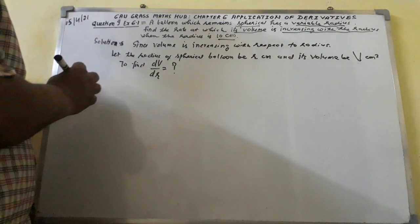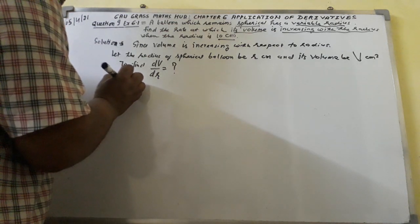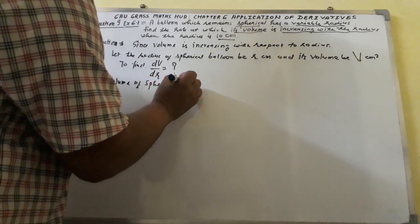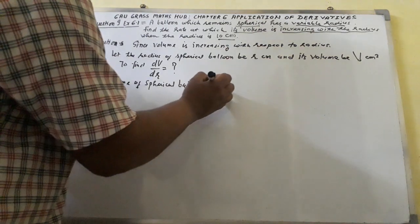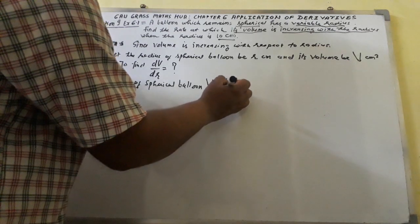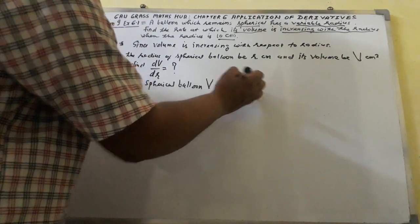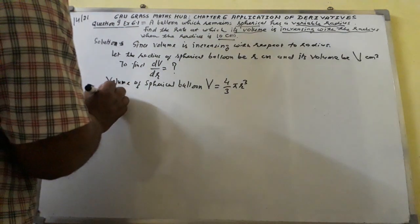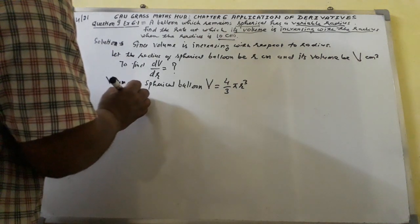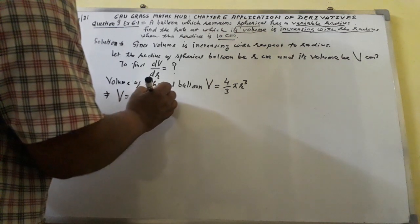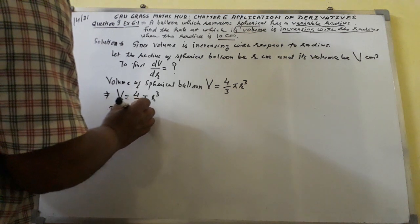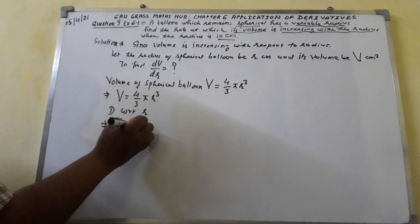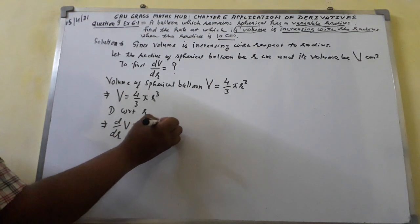The radius is given. So, knowing the formula: the volume of a spherical balloon is equal to 4/3 π r³. So V is equal to 4/3 π r³. Differentiating with respect to r, we get d/dr of V equal to 4/3 π times d/dr of r³.